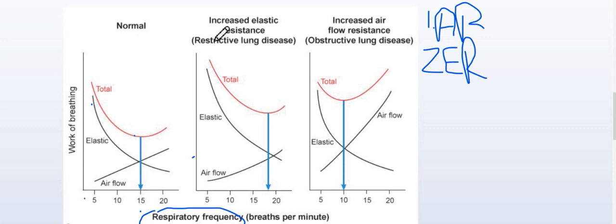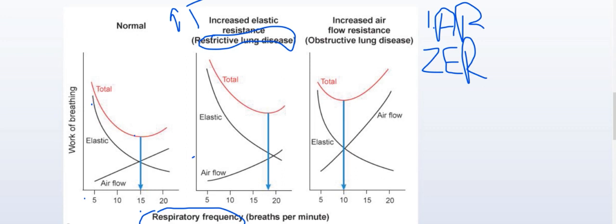In restrictive lung disease, as you know, there is increased fibrosis — such as in interstitial lung disease with pulmonary fibrosis. Looking at the graph, the airflow resistance is comparatively equal to normal — there is no big change there.